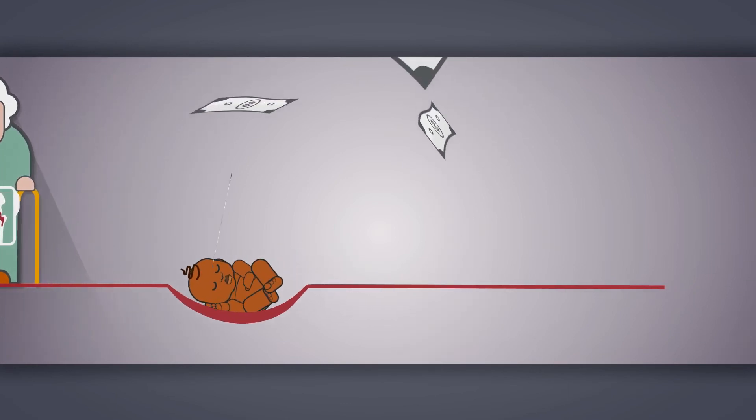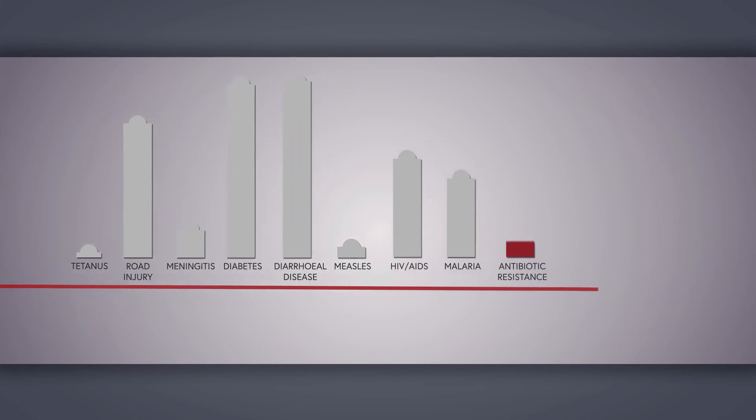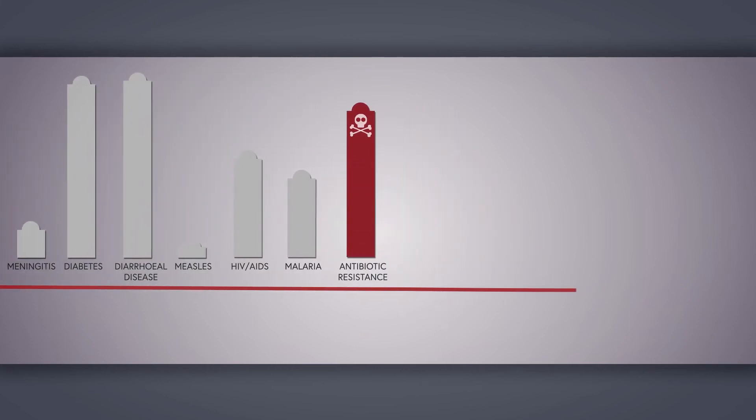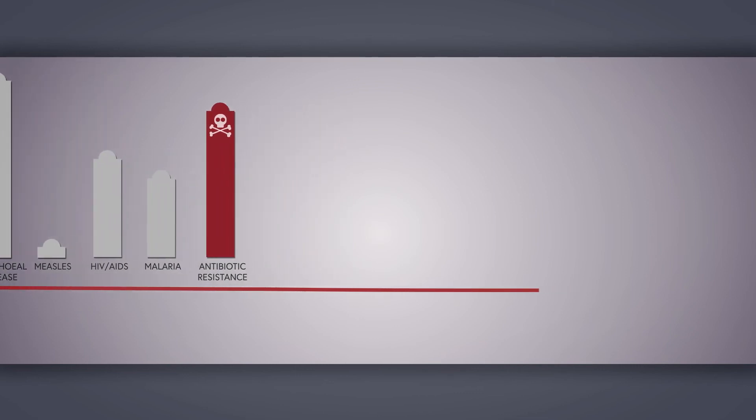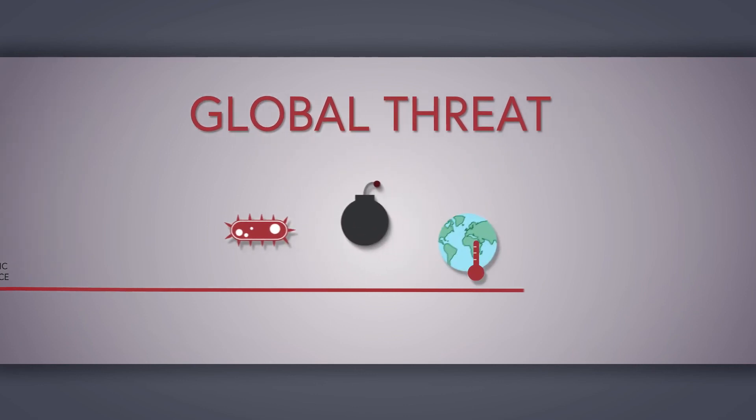Resistance is costly, both for the individual and for society. Already now, more than 1 million people die every year from resistant infections, exceeding the number of annual deaths from major diseases like HIV or malaria. Antibiotic resistance has been considered as dangerous and deadly as terrorism and global warming.